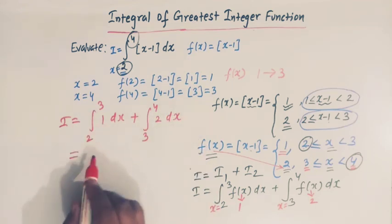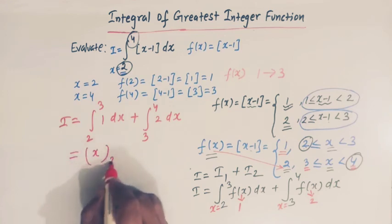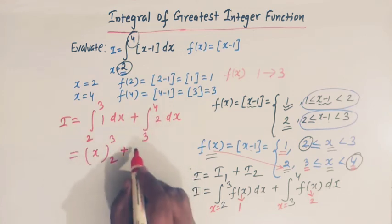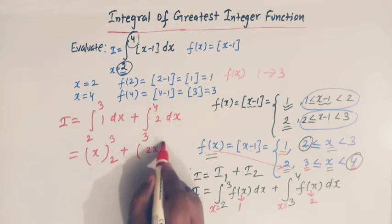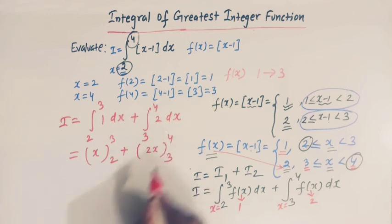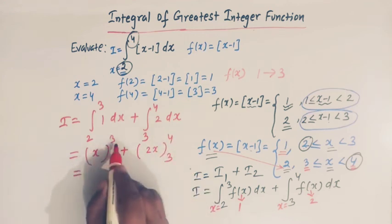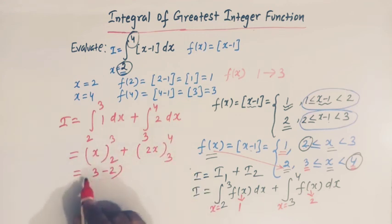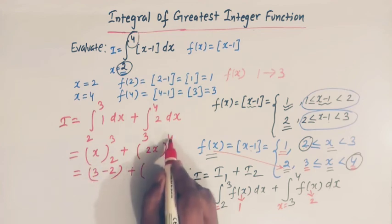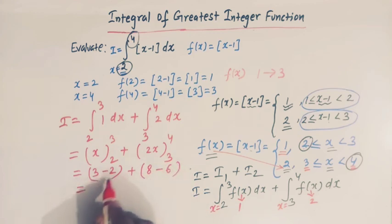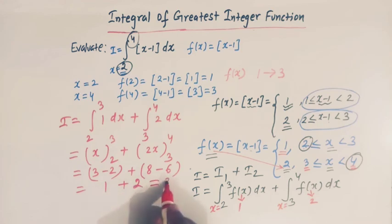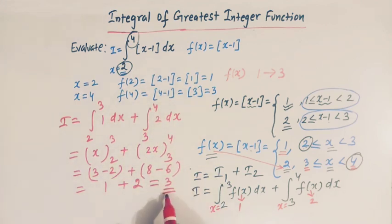The integral of 1 is x with limits 2 to 3, and the integral of 2 is 2x with limits 3 to 4. Substituting the limits: (3 − 2) + 2(4 − 3) = 1 + 2 = 3. So viewers, the value of this integral is 3.